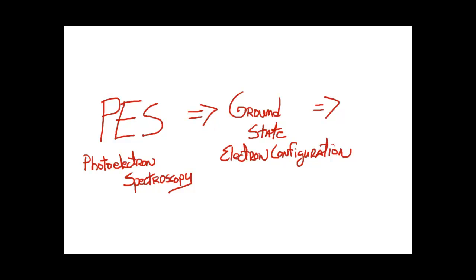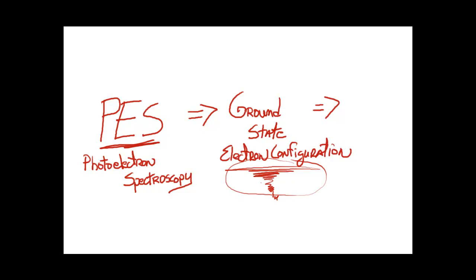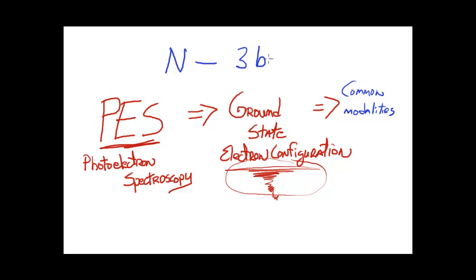I want to show you how we can take the information that we get from the photoelectron spectroscopy experiment and use that to construct the ground state electron configuration of an atom, what that means, and how this information can help us to provide an explanation for the common bonding modalities that we see for specific atoms — in other words, the common number of bonds that we observe for atoms in molecules. I want to focus in on nitrogen for this example. We know that we observe nitrogen forming three bonds in stable molecules that are not charged.